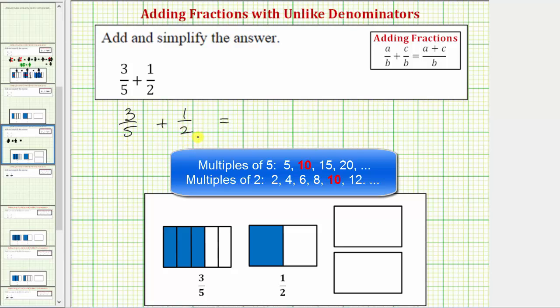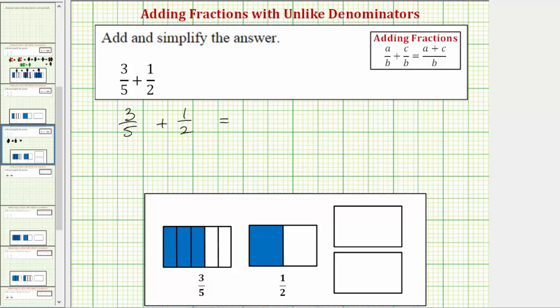And because five and two don't share any common factors, the least common multiple of five and two is going to be ten. So ten is going to be the least common denominator. So what we want to do is rewrite three fifths and one half as equivalent fractions with denominators of ten.